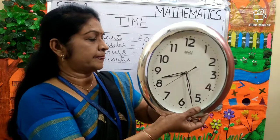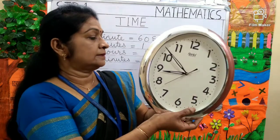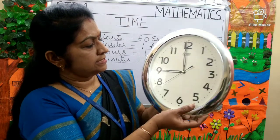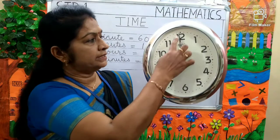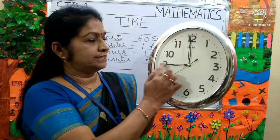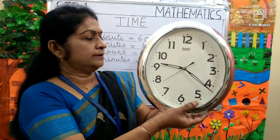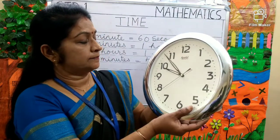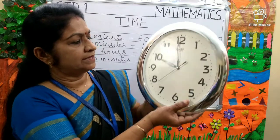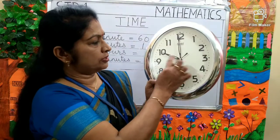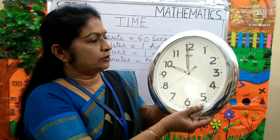Again, it is moving. Now, the hour hand is on 9 and the minute hand is on 12. So, the time is 9 o'clock. Now it is moving. What is the time? It is 10 o'clock. The hour hand is on 10 and the minute hand is on 12. So, it is 10 o'clock.